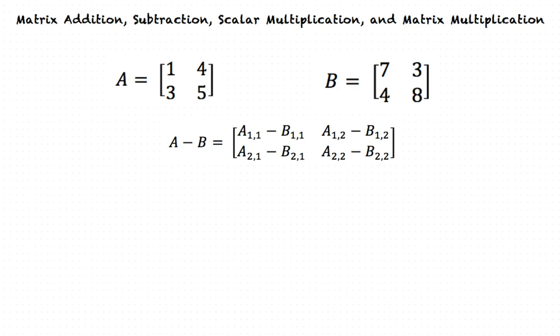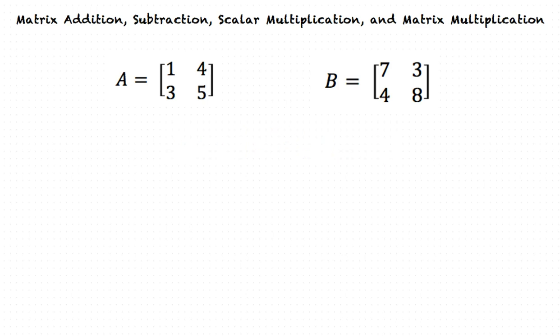We will now look at Scalar Multiplication. What's a scalar? A scalar is a quantity that only has magnitude and not direction — meaning it is one number and not a matrix. We will begin by multiplying the scalar 5 against Matrix A. This will look like 5 times A, equal to 5 times the matrix Row 1: 1, 4; Row 2: 3, 5. We now multiply the scalar into the matrix.